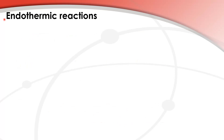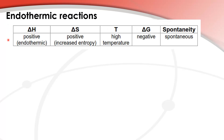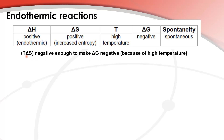Next we look at endothermic reactions. The first set of conditions is a positive ΔH — an endothermic reaction — with a positive or increased entropy and a high temperature. That will make ΔG negative, giving a spontaneous reaction, because the product T times ΔS is negative enough to make ΔG negative due to the high temperature.